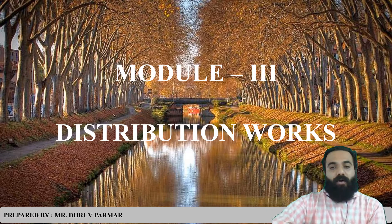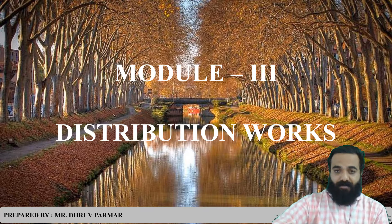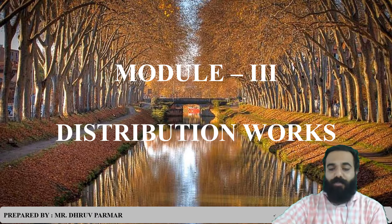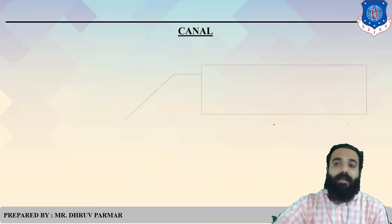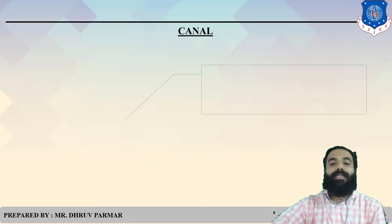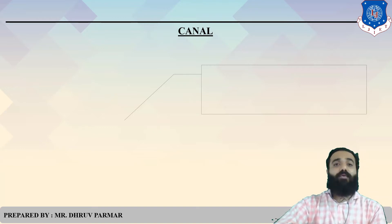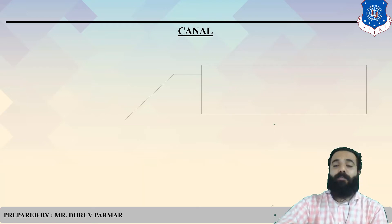Distribution of Water refers to the structures connected to the distribution of water from dam to field. How can you distribute water from dam to land? Obviously, by Canal. In this session, we discuss all things about Canal — how to design it, how to calculate, which type of canal and which shape of canal is most beneficial.